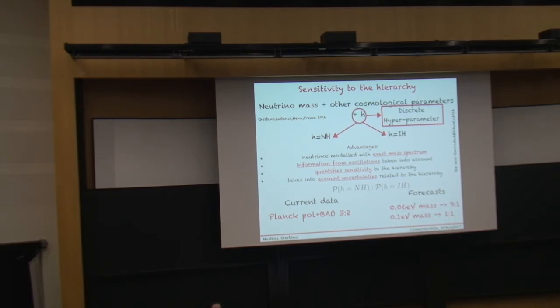We can assess the sensitivity simply by looking at the posterior distribution of this parameter that we convey in terms of odds, probability odds of normal hierarchy versus inverted hierarchy. And here I reported some of the most important results which is this mild preference for normal hierarchy in the case of current dataset which is Planck temperature and polarization combined with baryon acoustic oscillation and it is indeed a very mild preference for normal hierarchy.